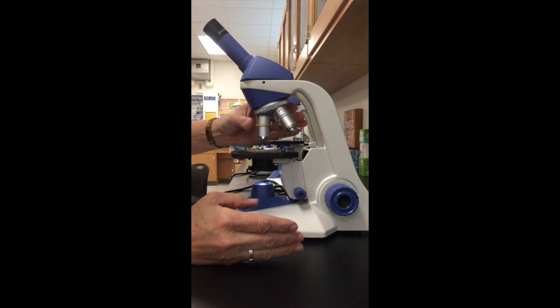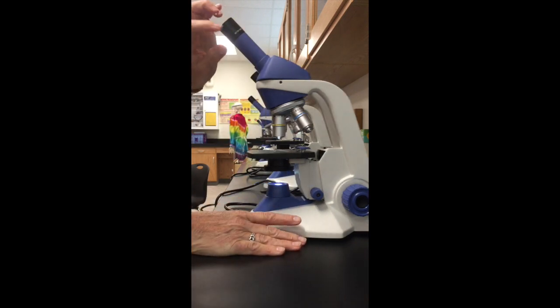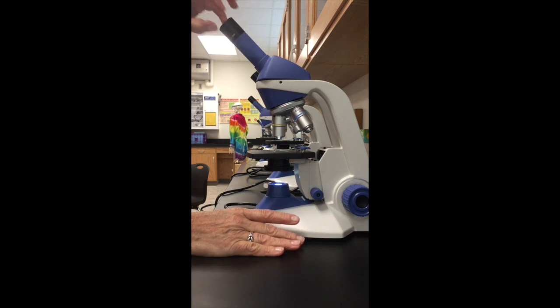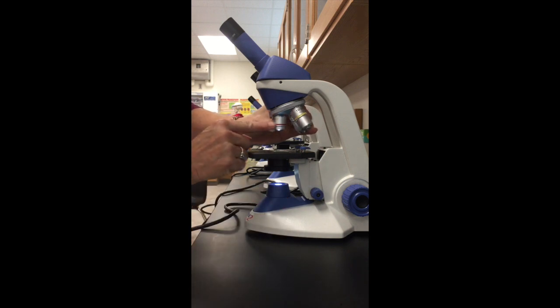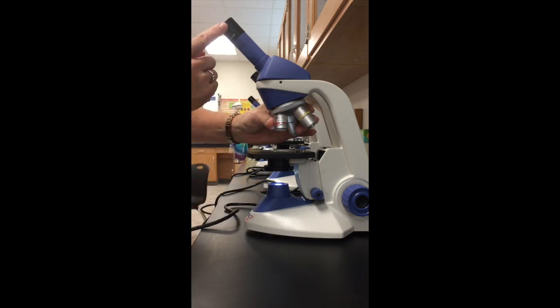First thing we want to do is turn on the microscope. The buttons are on the back of both types of microscopes. So we have the eyepiece has a magnification of 10. So everything is going to be multiplied by 10 by this eyepiece alone.